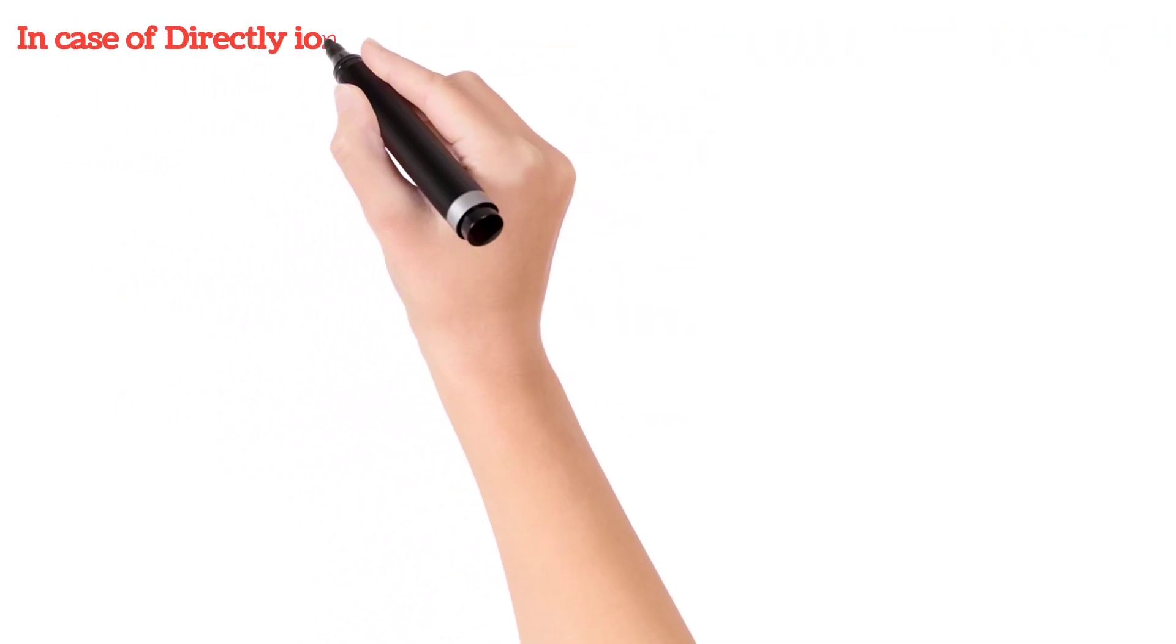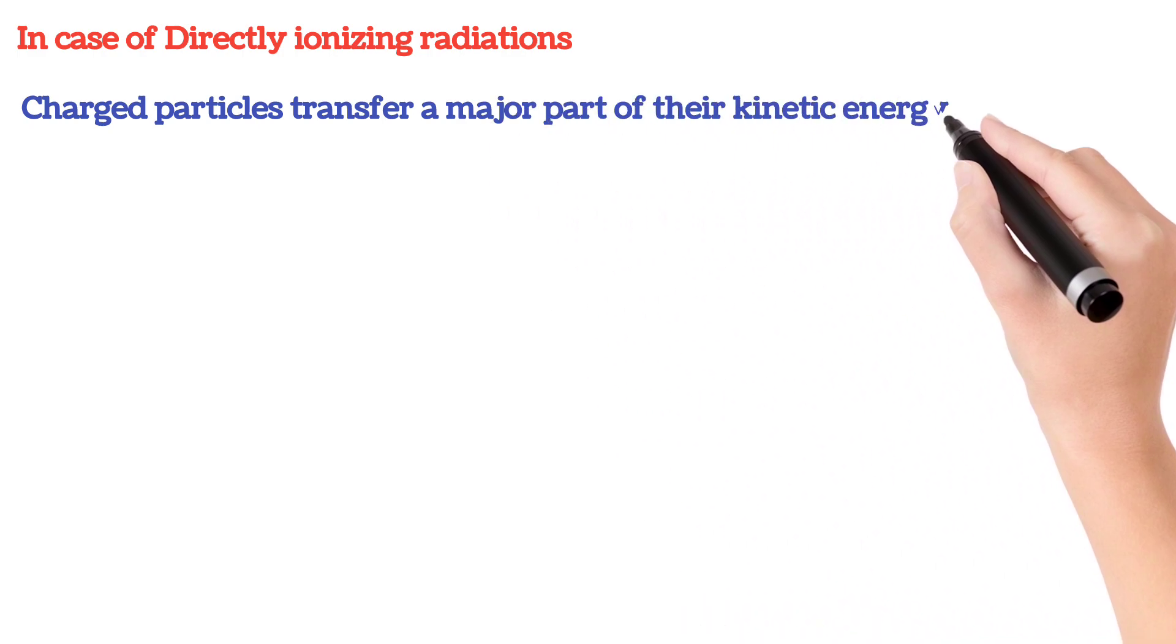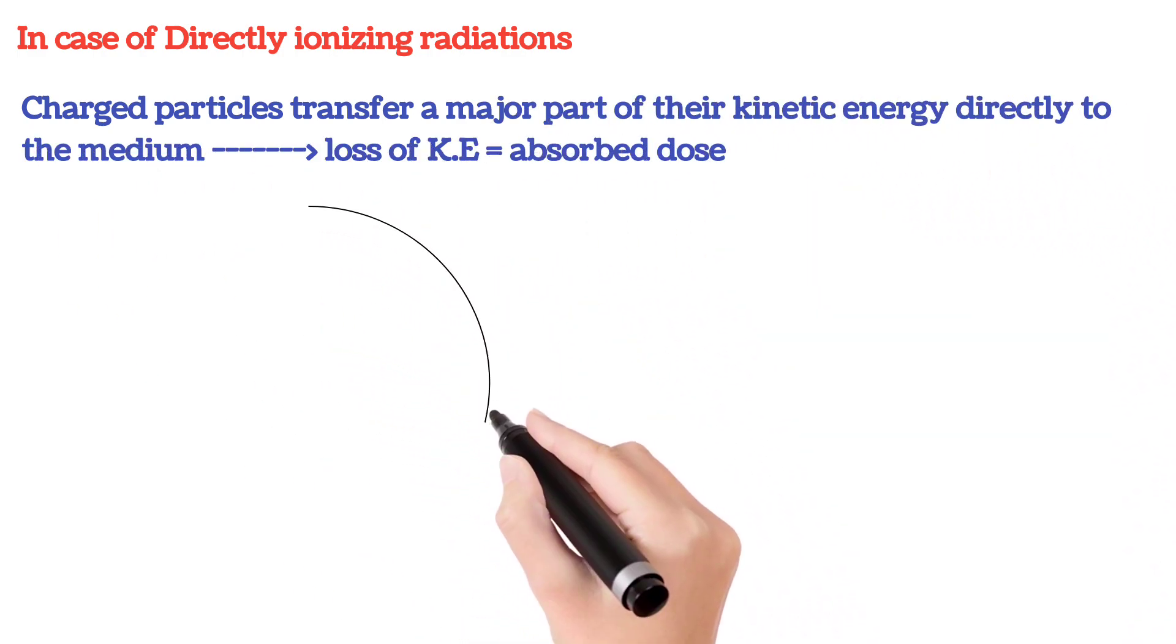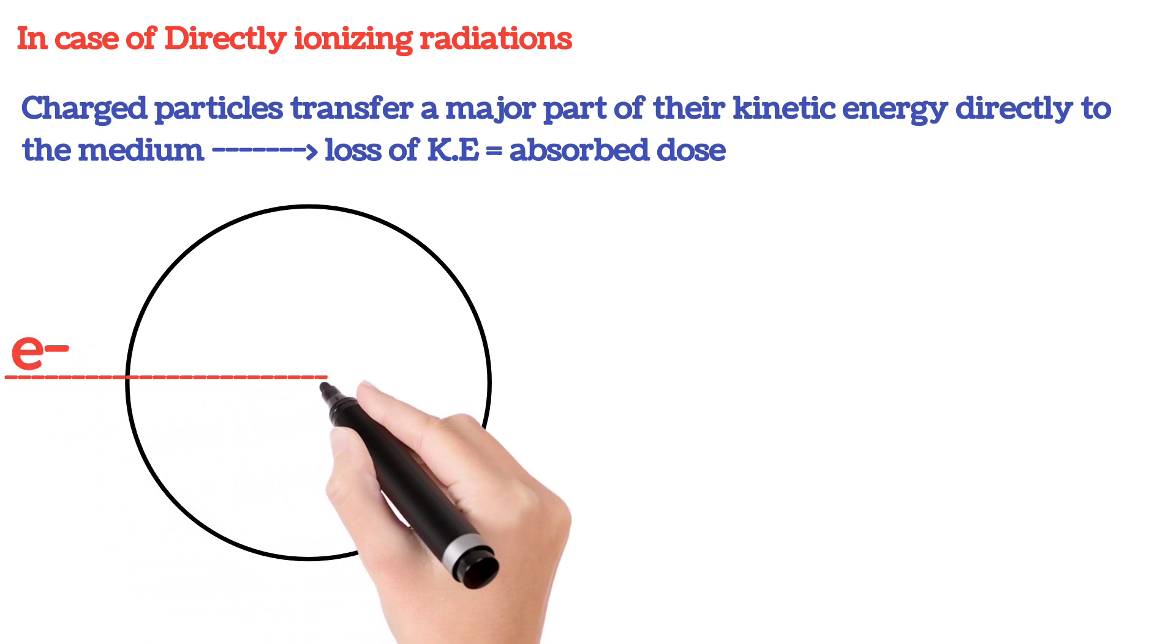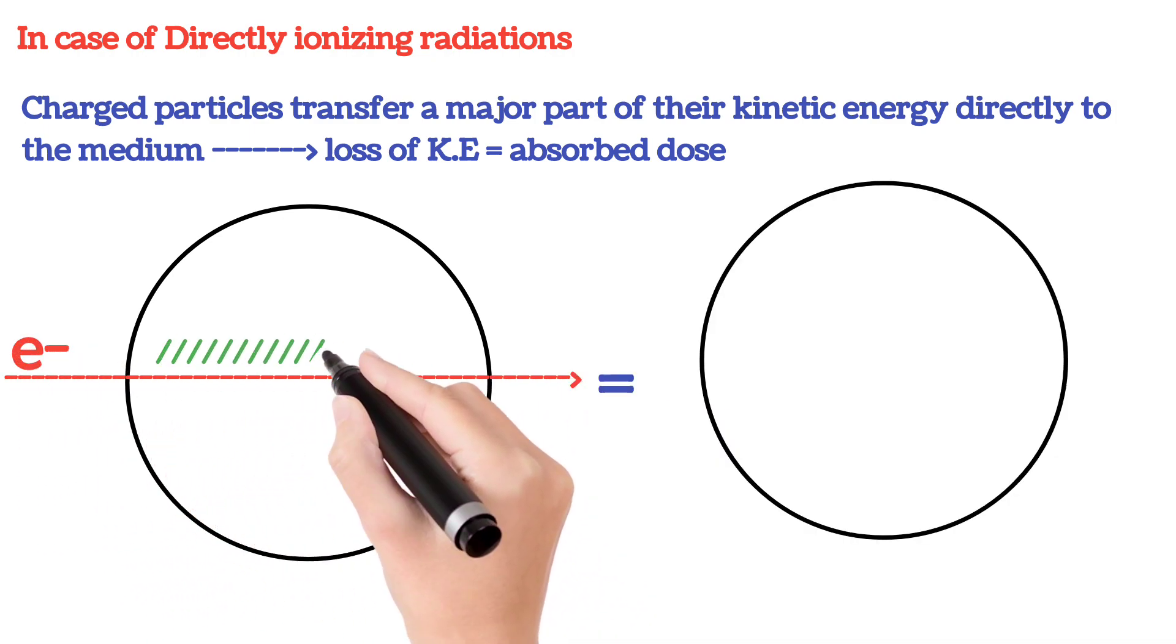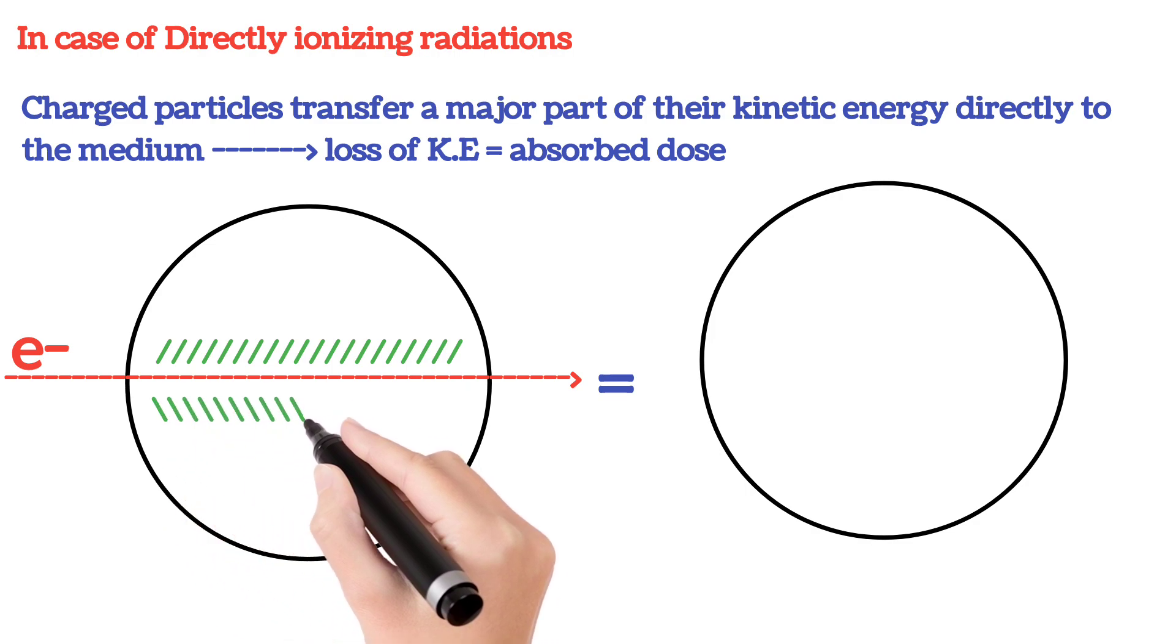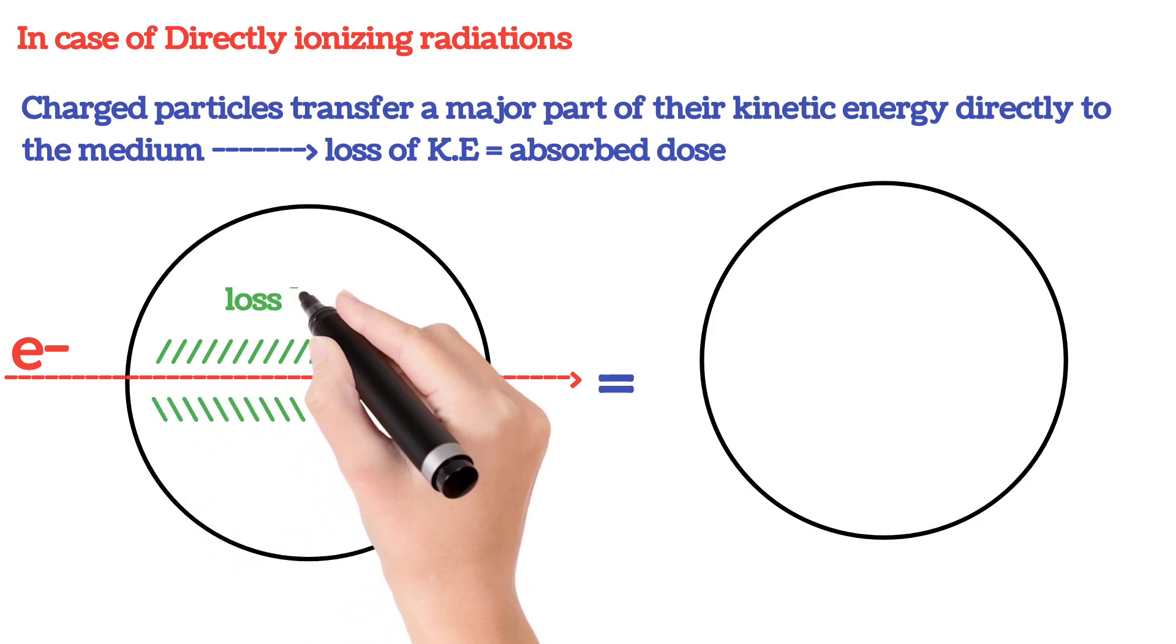In case of directly ionizing radiation, charged particles like electron beam or proton beam, when passing through the medium, they slow down and lose their kinetic energy, so that a major part of their kinetic energy directly transfers to the medium.